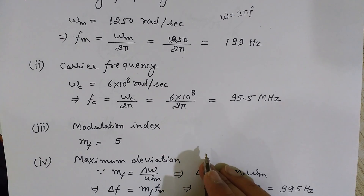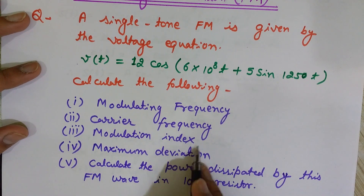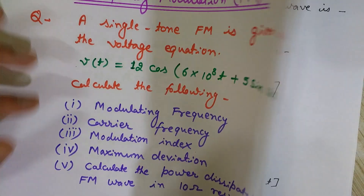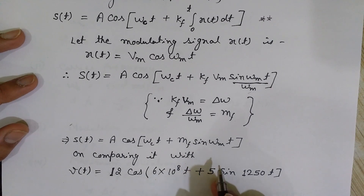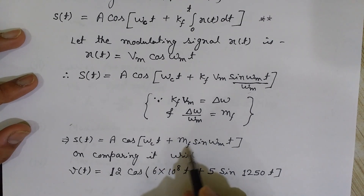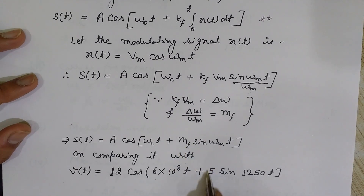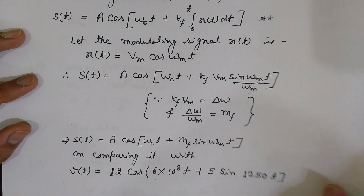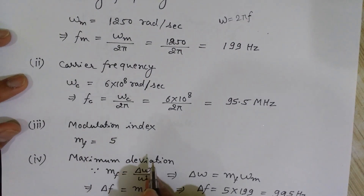The third thing to find is the modulation index. The modulation index for FM is denoted by mf, which appears just before the sin term. By comparison, 5 is simply the modulation index. So mf = 5.